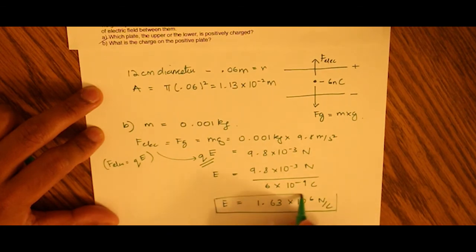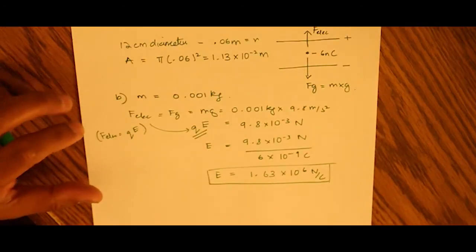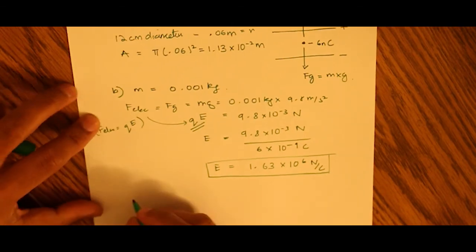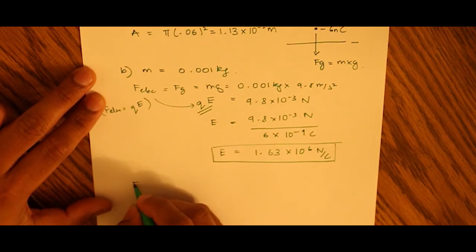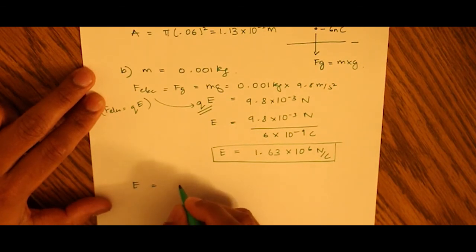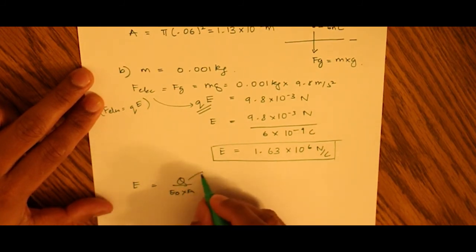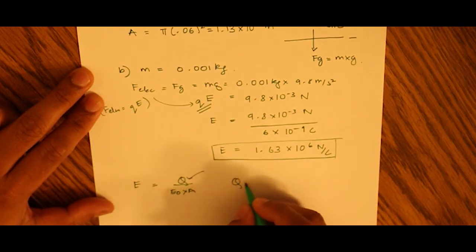And now, since we found out what the value of the electric field is, now from the electric field equation, which is the electric field equals the charge on the electrode times the permittivity constant times the area of the electrode. So now we can find out what q is, which is what we wanted to find out in the first place.